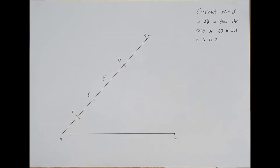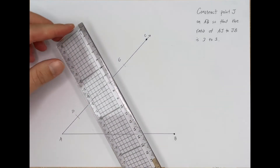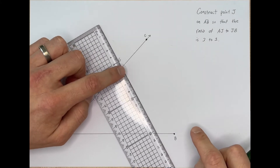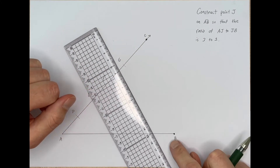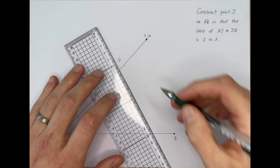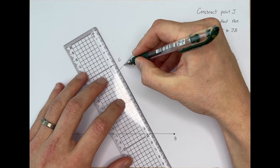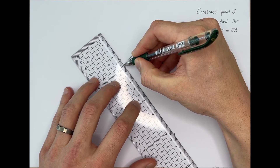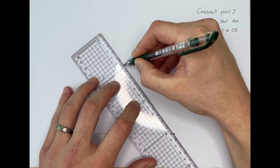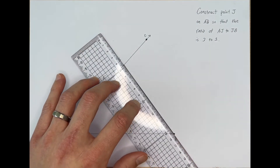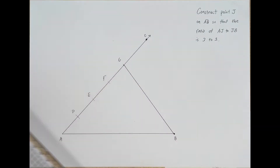Now we're going to take our straight edge and connect point G — the point we created up here — to point B down here. We'll take our pencil and straight edge and draw this segment connecting those two points.